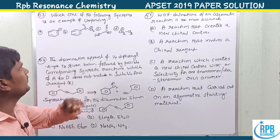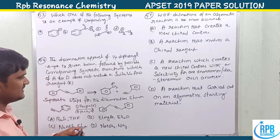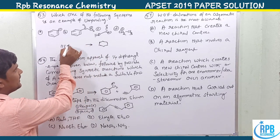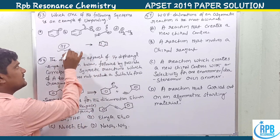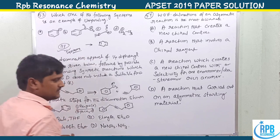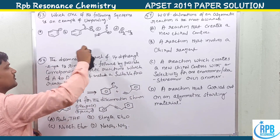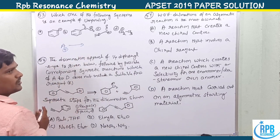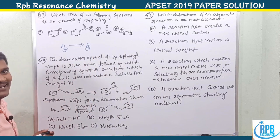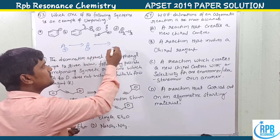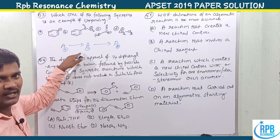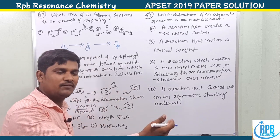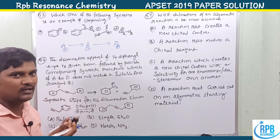Question 53: which of the following synthons is an example of ambiphilic synthons? This is related to retrosynthesis. The desired product is broken down to identify what reactants were used — these fragments are called synthons. Ambiphilic character means a carbon that is normally electrophilic converts into a nucleophile, or a normally nucleophilic carbon converts into an electrophile — showing both electrophilic and nucleophilic character. That carbon atom is ambiphilic.